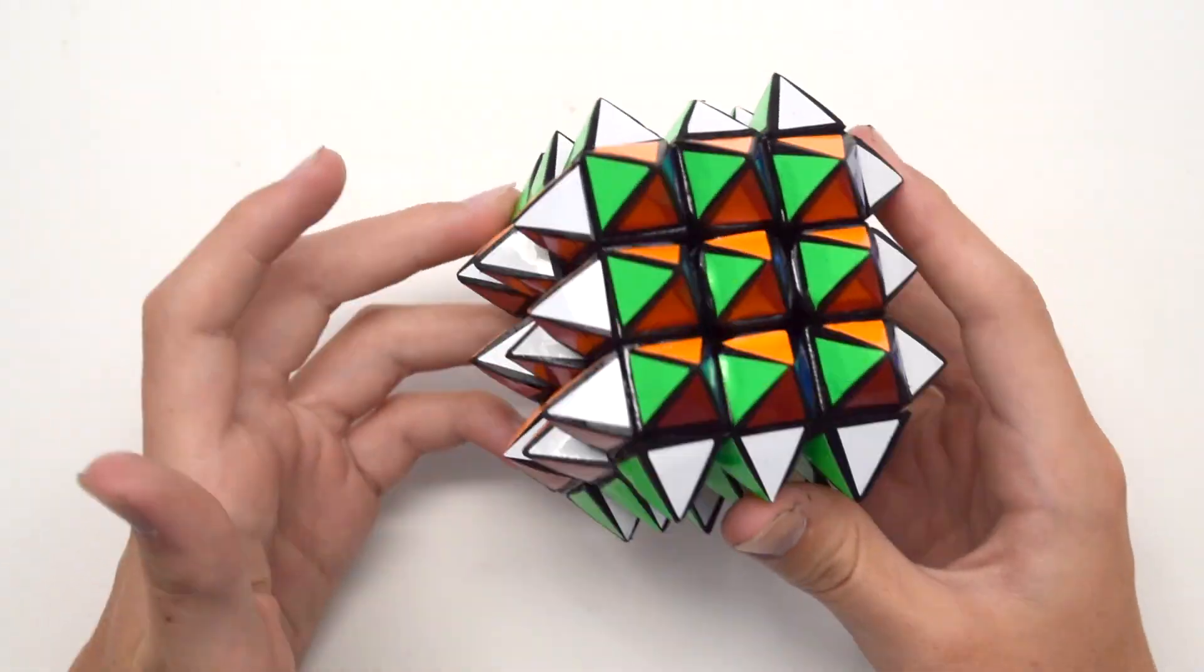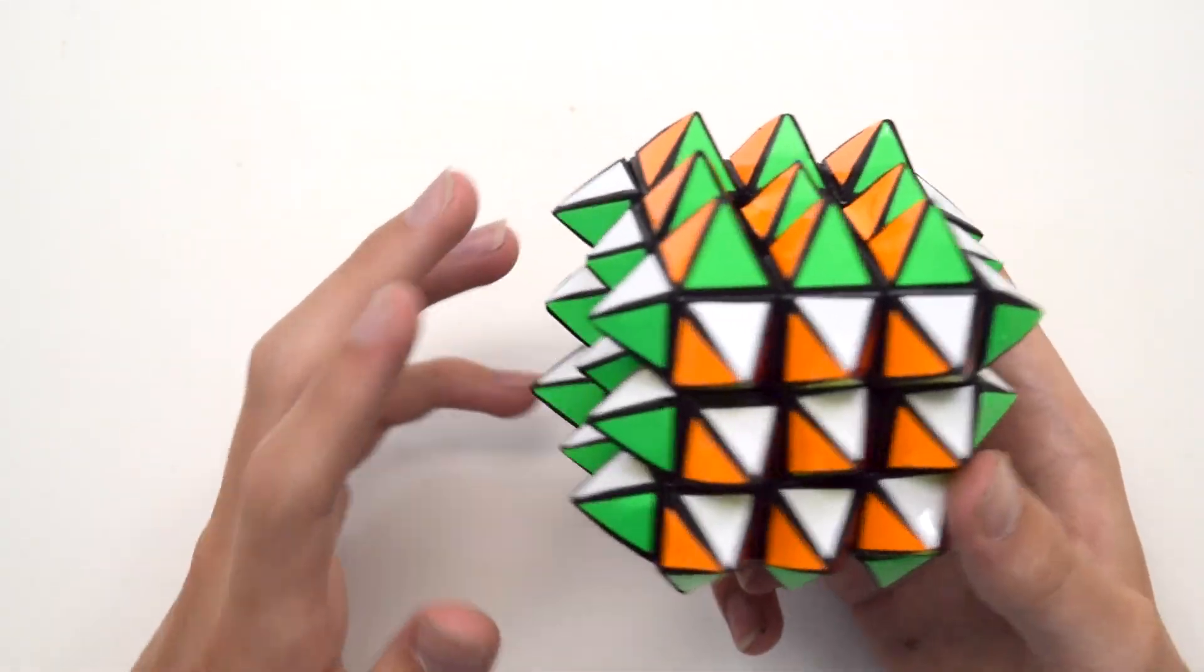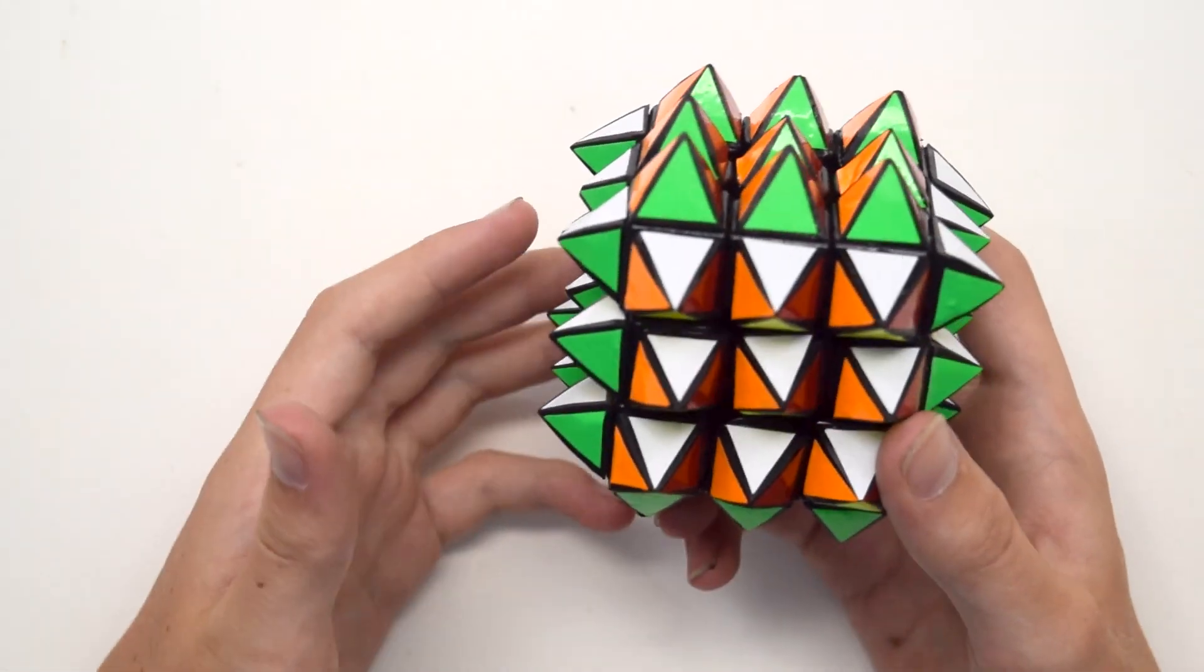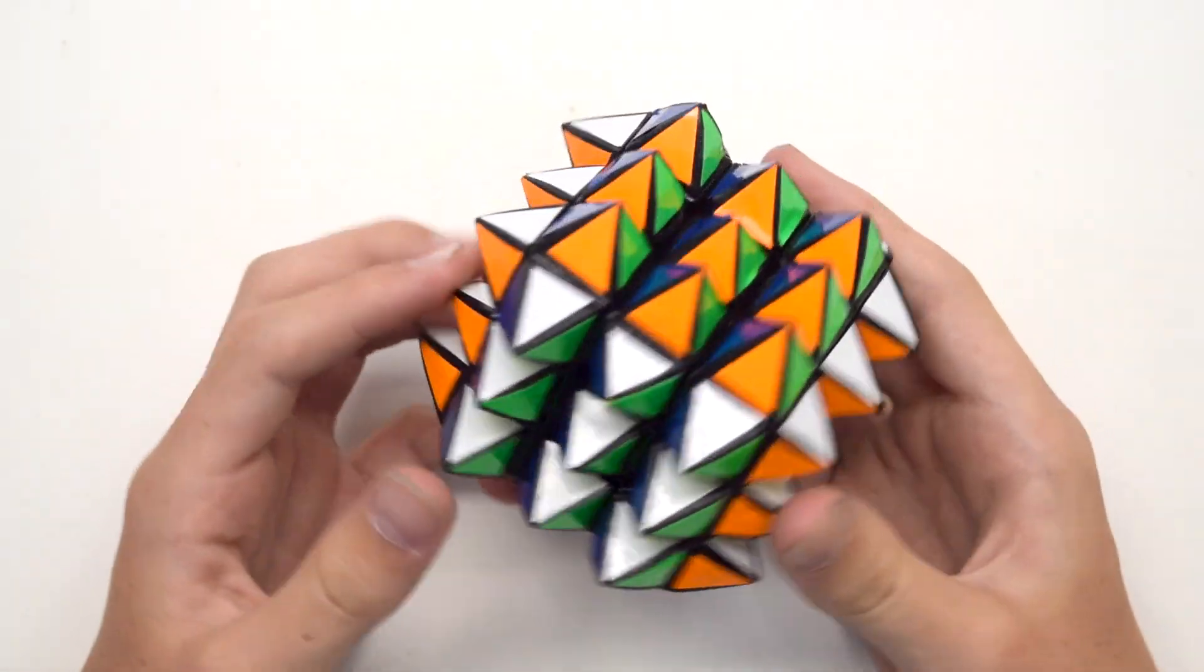You might have seen the spiky cube that I made a while ago with my dad. This was a 3x3 modification that had spikes glued onto the outside of it for extensions. It was also a sticker mod, which made it a supercube and fairly difficult to solve.